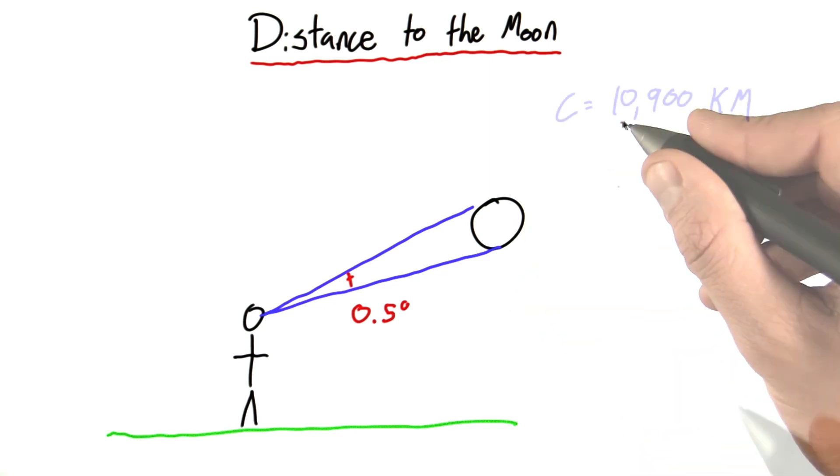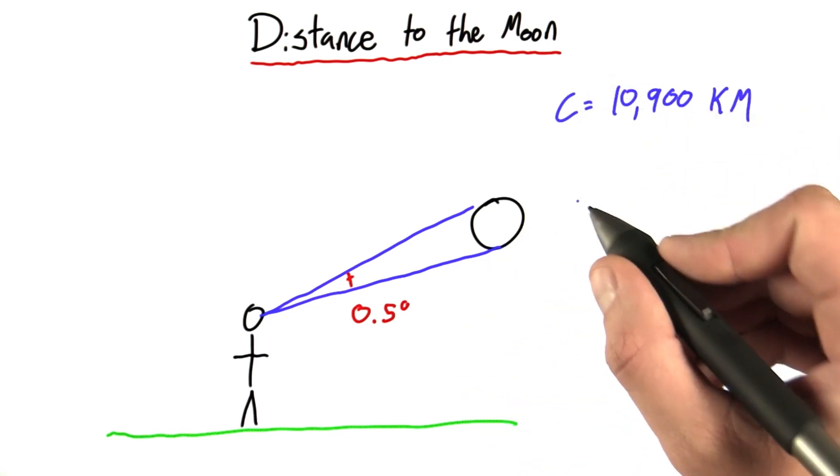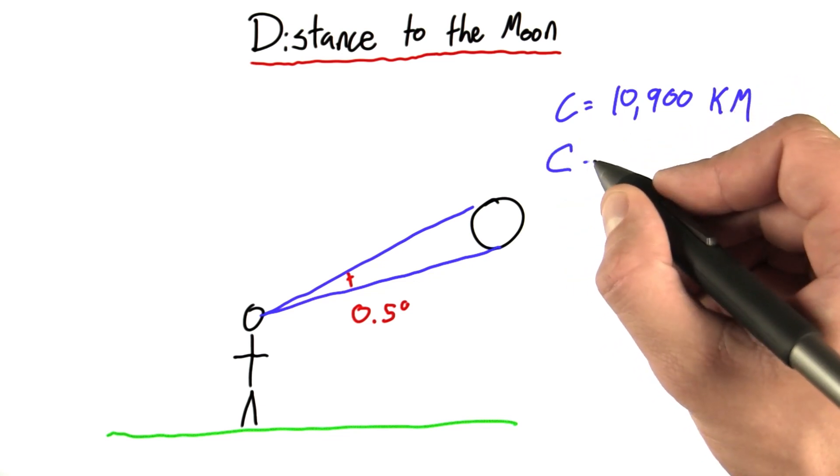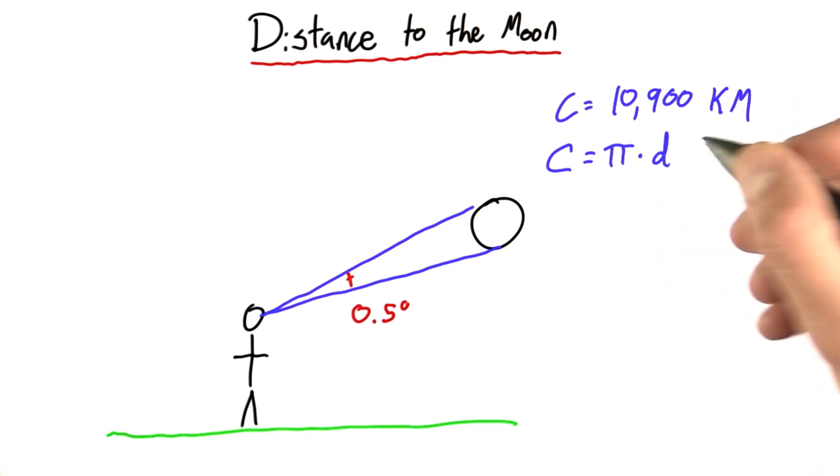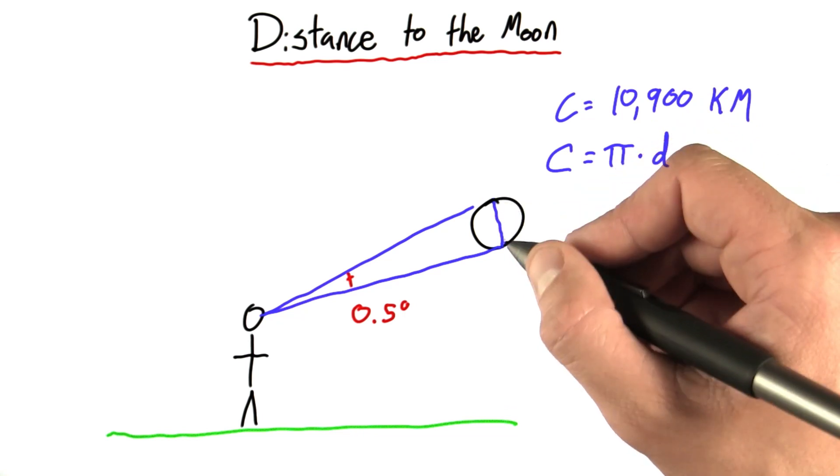We know the circumference of the moon, and you may or may not know the formula for the circumference is that the circumference of any circle is equal to pi times its diameter. And the diameter is this distance from one end to the other end.